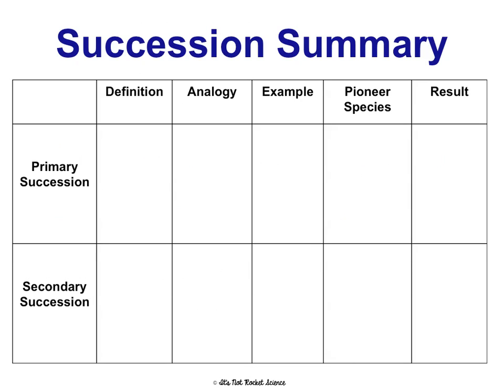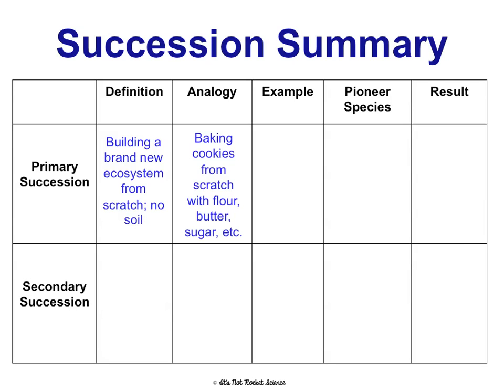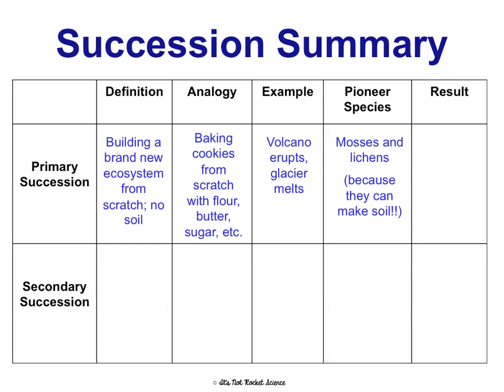This chart compares the two types. Primary succession: definition — brand new ecosystem from scratch, no soil. Analogy: this is like making cookies from scratch with flour, butter, sugar, vanilla, and chocolate chips — you're starting from nothing. A real-world example is a volcano erupting or a glacier melting. The pioneer species will be moss and lichens because they're able to make soil, and the result will be a mature and stable climax community.